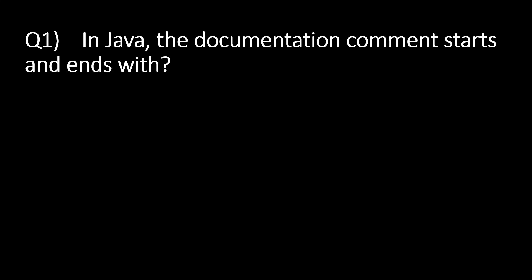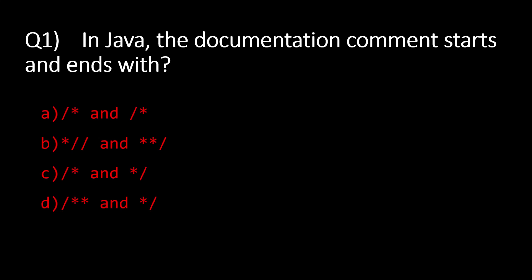The first question reads: in Java, the documentation comment starts and ends with what? Option A is slash-star and star-slash. Option B is star-slash-slash and star-star. Option C is slash-star and star-slash. Option D is slash-star-star and star-slash. Option A is definitely not correct because of the last star-comment format, and option B is wrong because star-slash-slash is not a valid comment at all.